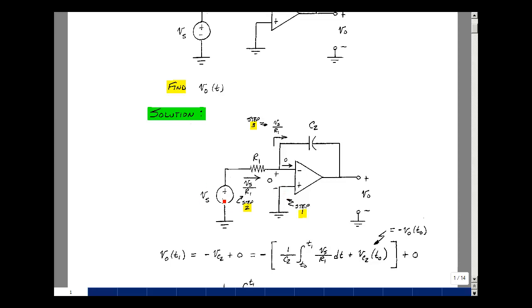A voltage V sub s is applied, current flows, and we can solve for that current by finding the voltage across the resistor R1, which is going to be V sub s minus zero. There's V sub s across R1. That gives me a current, V sub s over R1.